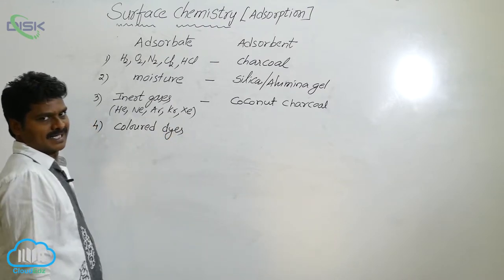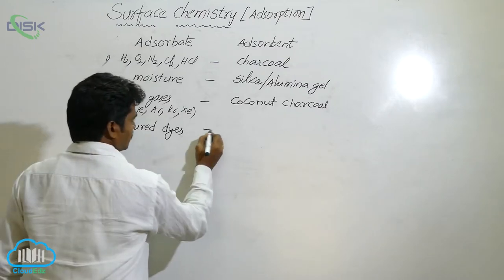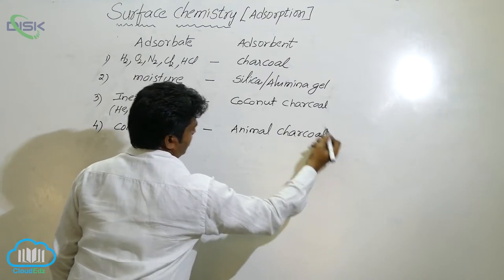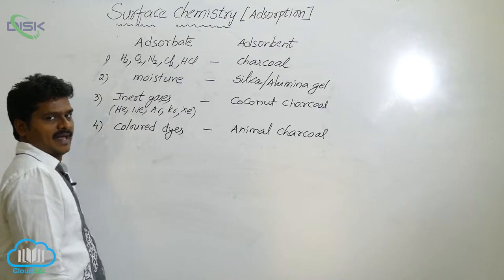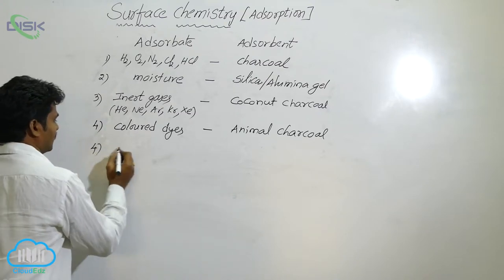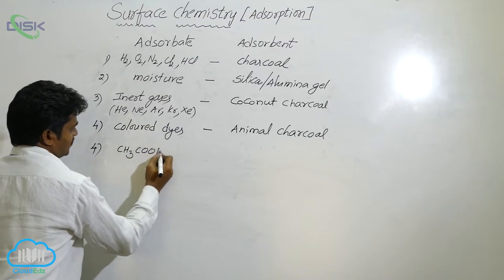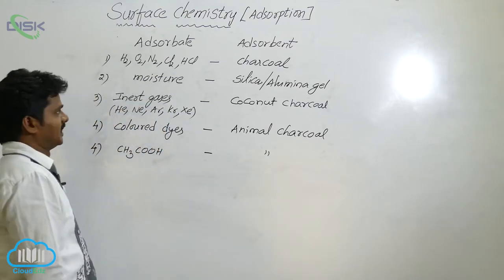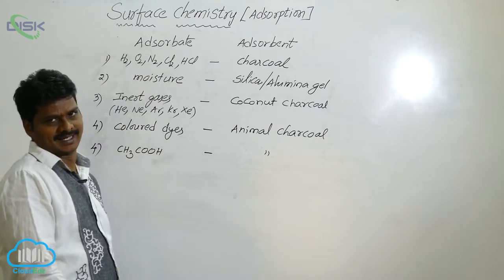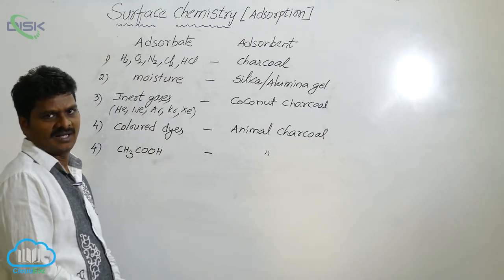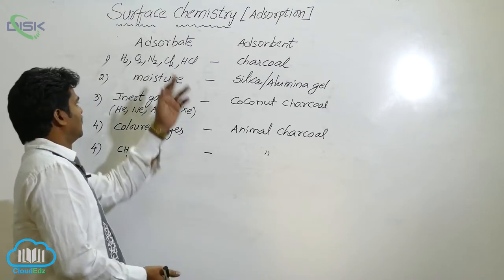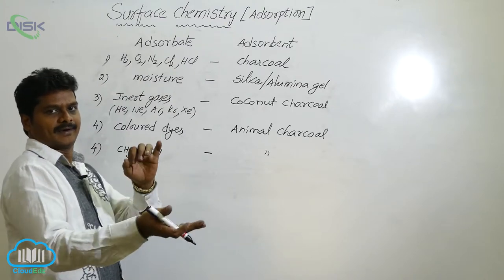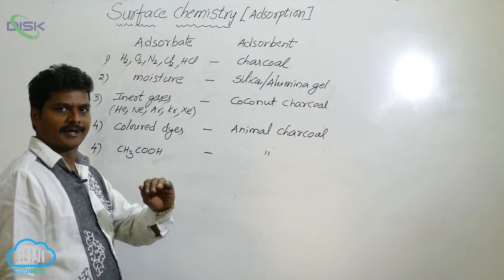Fourth, for colored dyes in solution, animal charcoal acts as the adsorbent. Similarly, for acetic acid (CH₃COOH) in solution, animal charcoal also acts as the adsorbent. To experience the adsorption process, take any of these gases in a closed vessel.